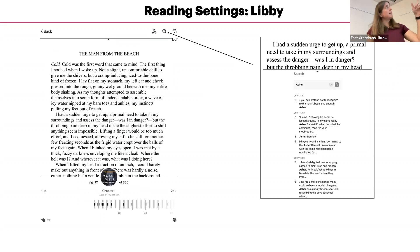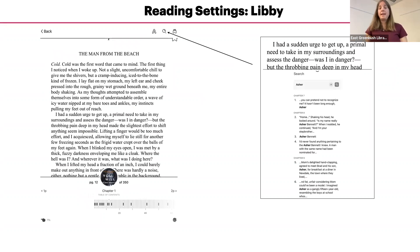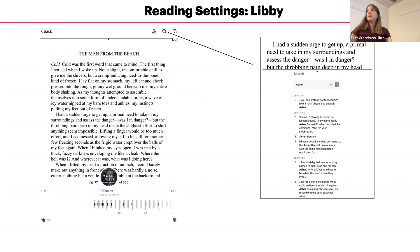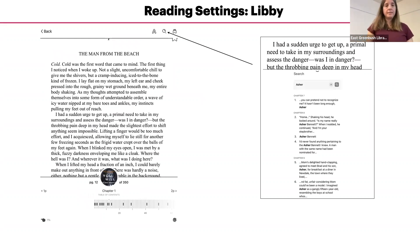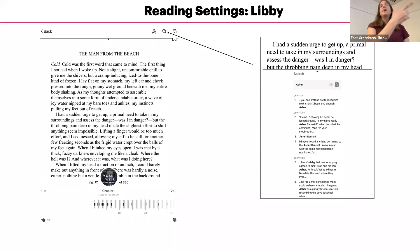The magnifying glass up on the top right will allow you to search within the book. This may come in handy — for example, if you are looking for when a certain character appeared, or if you remember a phrase being said. It will search throughout the book and display the results on the right-hand side. It's pretty neat.